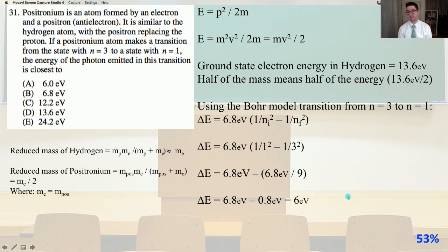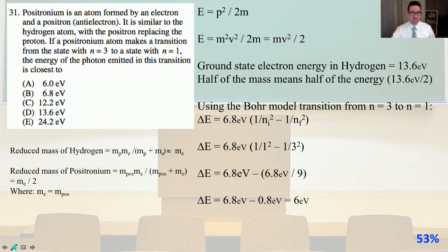Using the Bohr model transition from n equals 3 to n equals 1, the change in energy equals 6.8 electron volts times 1 over ni squared minus 1 over nf squared, where ni is the initial n and nf is the final n. So delta E is going to equal 6.8 electron volts times the quantity 1 over 1 squared minus 1 over 3 squared, which equals 6.8 electron volts minus 6.8 electron volts divided by 9, so 6.8 minus 0.8 equals 6.8 electron volts. That is answer A.